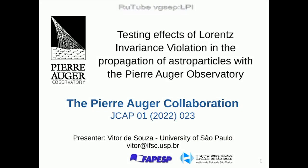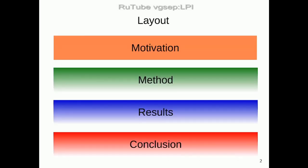I'm going to show you the results presented in this paper by the Pierre Auger collaboration about testing Lorentz invariance violation with the data. The layout of the talk: I'm going to give you the motivations, explain the method, show the results, and then conclude.